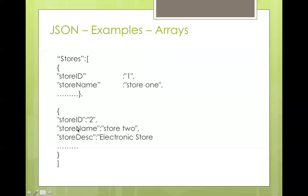Sometimes you have an array within an object. For example, here we have store description, we have an icon, and you can have a list of images for that store. So you will have an array inside the object with image one, image two, image three, and so forth. To get to that array, you use the key for that array — for example, 'store images' — and then you will have an array of values.